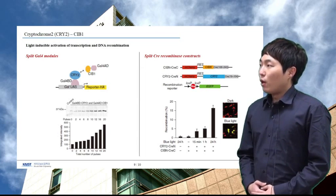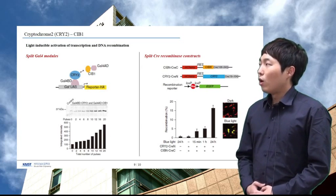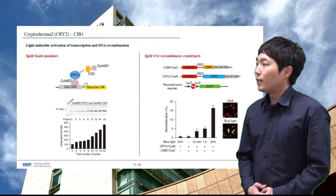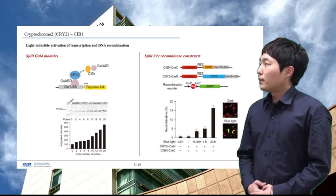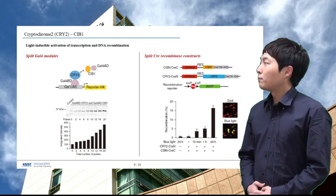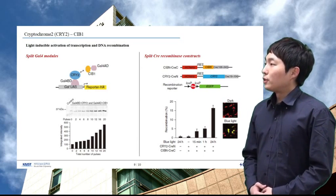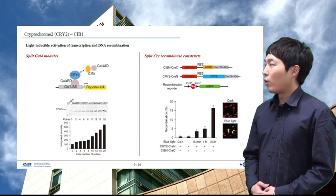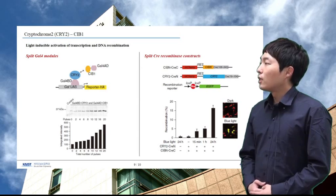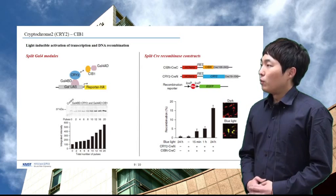They also tested the ability of the cryptochrome-CIB modules to induce dimerization of split CRE recombinase, allowing light-dependent control of DNA recombination. As a reporter of CRE recombinase activity, they used a plasmid containing a transcriptional stop sequence flanked by LoxP sites preceding EGFP. Cells containing cryptochrome-CIB and CRE exposed to continuously pulsed blue light for 24 hours showed a 158-fold increase in the number of EGFP-expressing cells compared to samples incubated in the dark, indicating robust light-dependent activation.